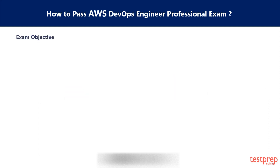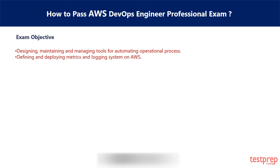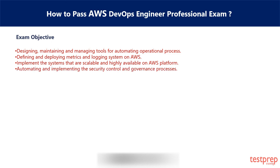Exam Objectives: Individuals taking this exam are assessed on the following abilities. 1. Designing, maintaining, and managing tools for automating operational processes. 2. Defining and deploying metrics and logging systems on AWS. 3. Implementing systems that are scalable and highly available on the AWS platform. 4. Automating and implementing security controls and governance processes.